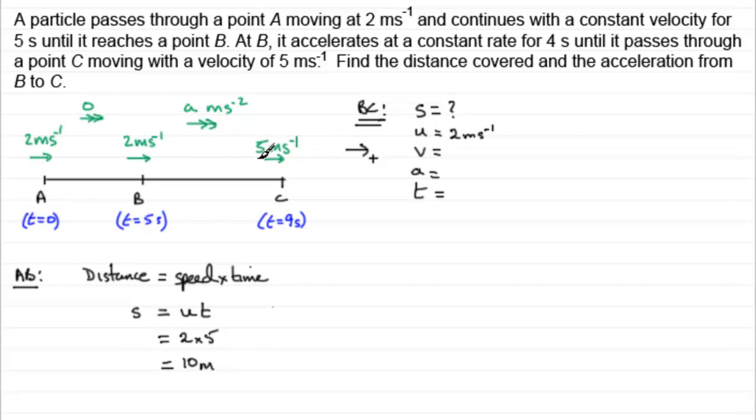V, the final velocity, 5 meters per second to the right. The acceleration A, well, we've got to find that. So we don't know that at the moment. T, the time, well it took 4 seconds to go from B to C. So we've got 4 seconds there.